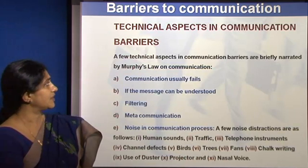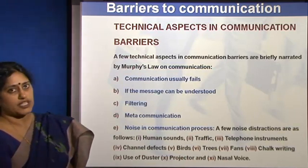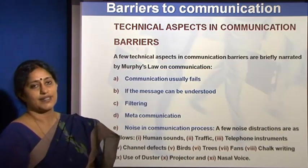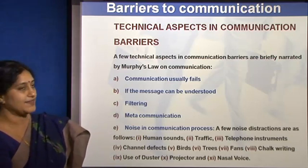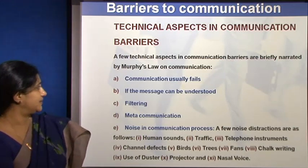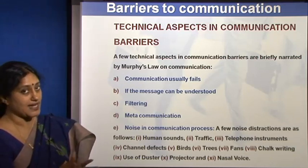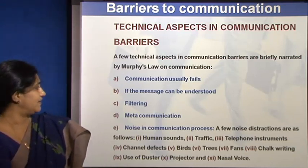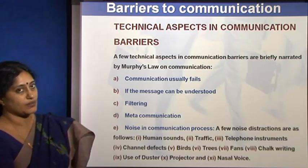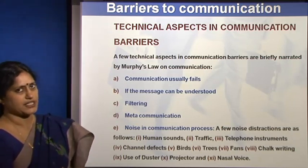Technical aspects in communication barriers: communication usually fails due to Murphy's Law — it doesn't matter how well planned things are. If a message can be misunderstood, it will be misunderstood, so it must be written carefully. Filtering — only receiving what one wants — and metacommunication, which is reading too much into a communication, are also technical concerns. Noise in the communication process, whether due to line or signal problems, further disrupts transmission.